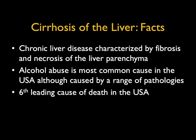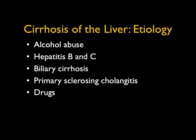Let's talk about cirrhosis — chronic liver disease characterized by fibrosis and necrosis of the liver parenchyma. Alcohol abuse is the most common cause in the U.S., though there are many causes. Chronic liver disease is the sixth leading cause of death in the U.S., and that number is increasing. Beyond alcohol abuse, hepatitis, biliary cirrhosis, primary sclerosis and cholangitis, and drug abuse are all common etiologies.